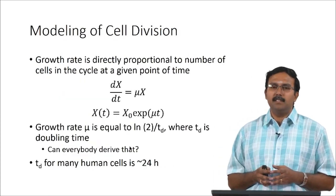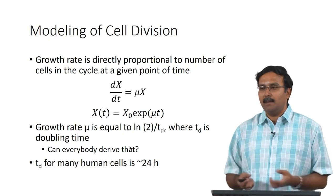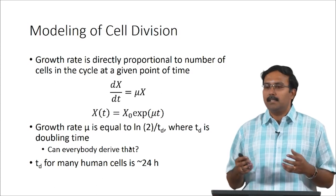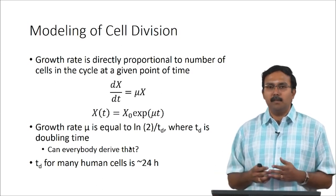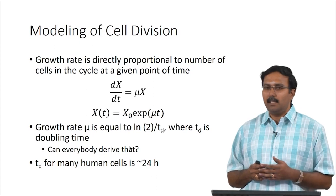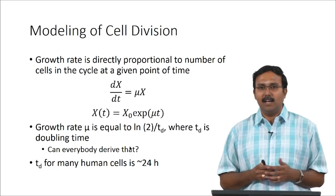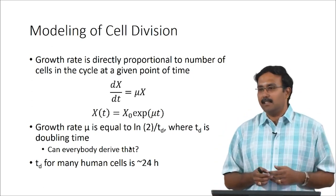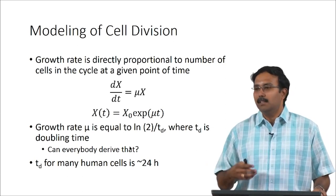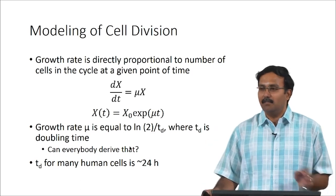Cell division can be mathematically modeled. Growth rate is directly proportional to the number of cells present: dx/dt = μx, where μ is the specific growth rate. This can be solved to give x = x₀·e^(μt), and the growth rate μ equals ln2 divided by td, where td is the doubling time.